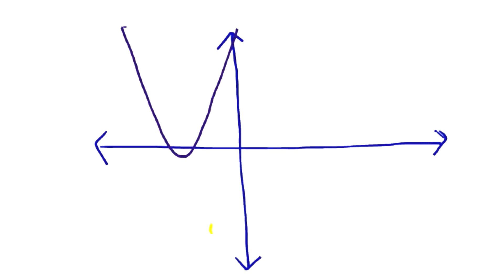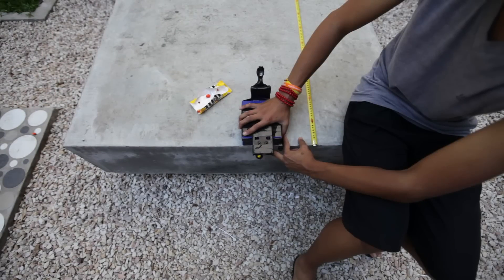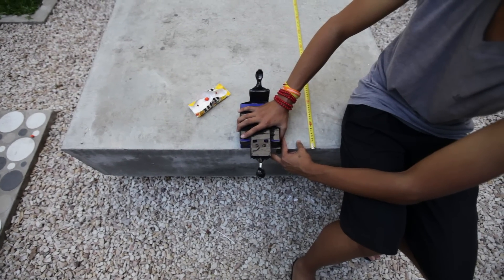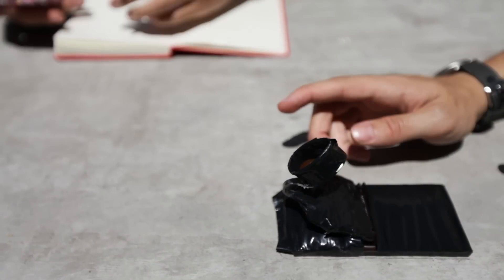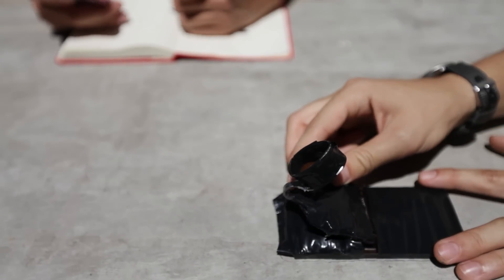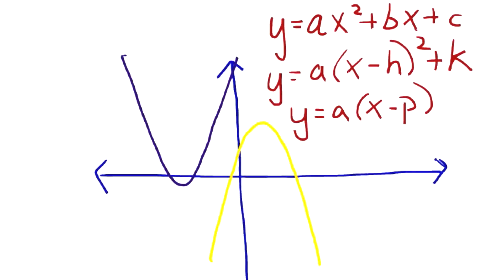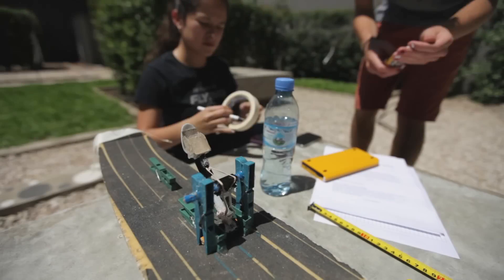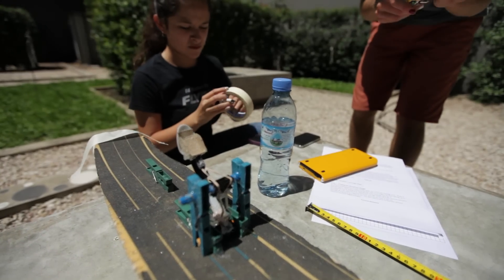Our ninth and tenth graders have been studying quadratic functions — basically any function that models a parabolic path. When you throw a ball, the path is a symmetrical curve that goes upwards and then back downwards. We started off in math class learning about quadratic functions, how they work, what formulas you can use to solve them, and then we decided to take it to the next level and really explore how we can use these functions in real life.